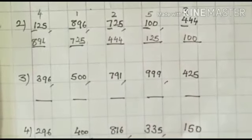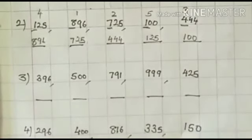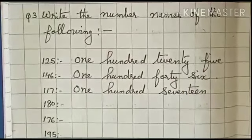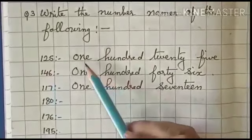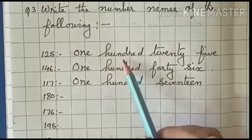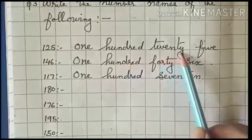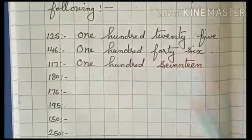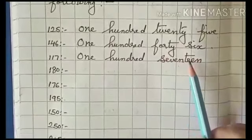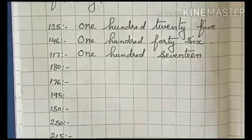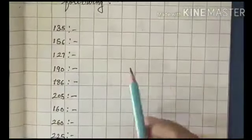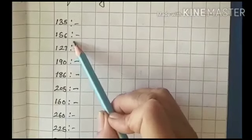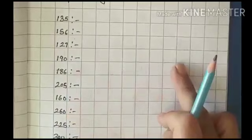Now, number names of the following — means you have to write the spellings of the numbers. The first one is 125: ONE HUNDRED TWENTY-FIVE. Then 146: ONE HUNDRED FORTY-SIX. Then 117: ONE HUNDRED SEVENTEEN. The rest of the numbers you will write in your notebook. You are going to do the same for the homework questions, number 3 and number 4, writing number names for numbers like 135 and others.